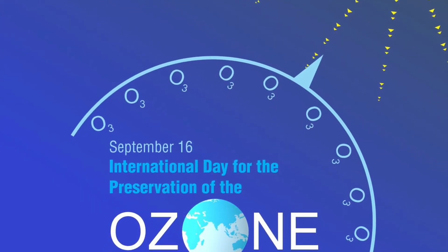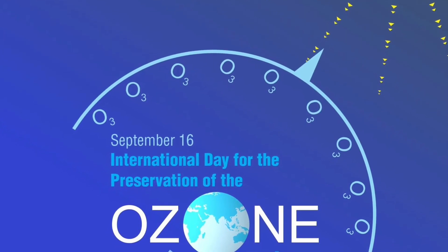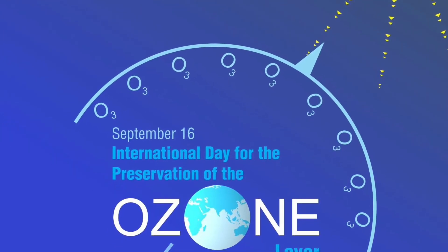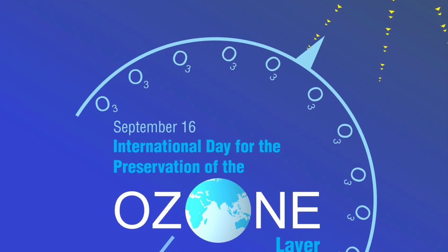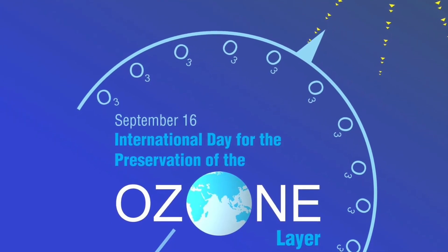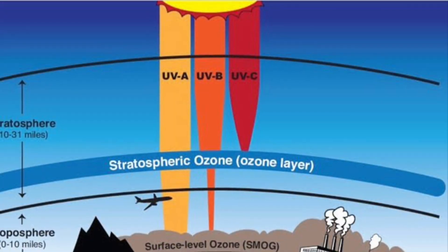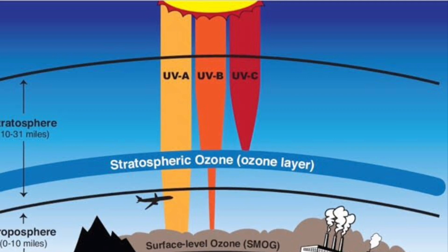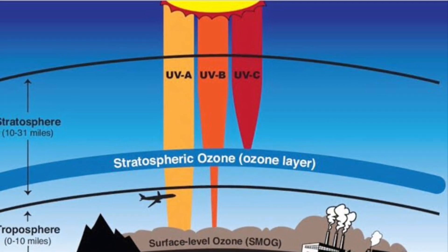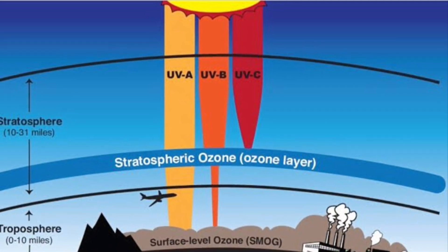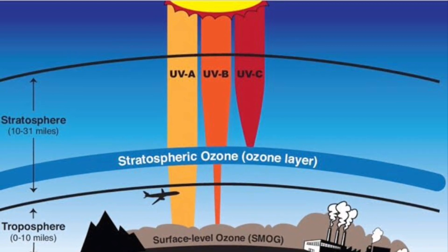O3 molecules break. That is oxygen and a single atom break — 2 plus 1 breaks. The O3 will then reform O3. It is like ozone — the ozone layer is formed.